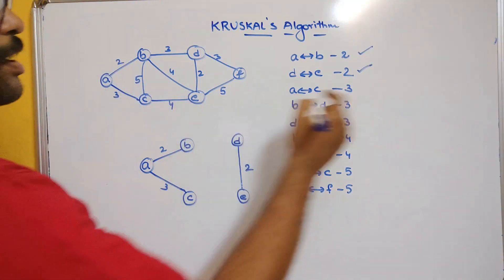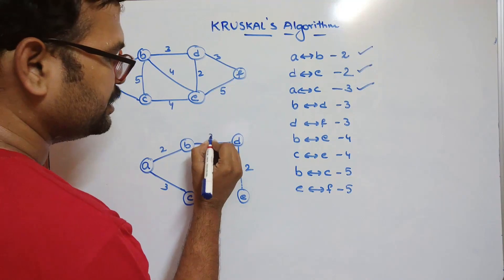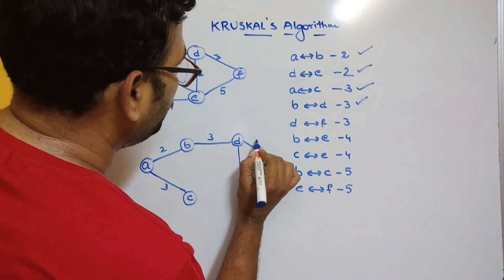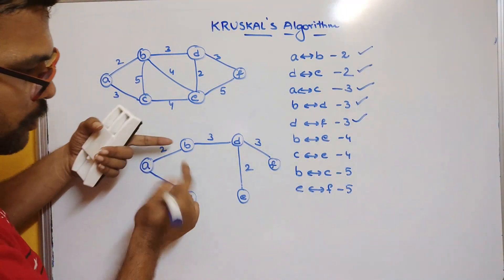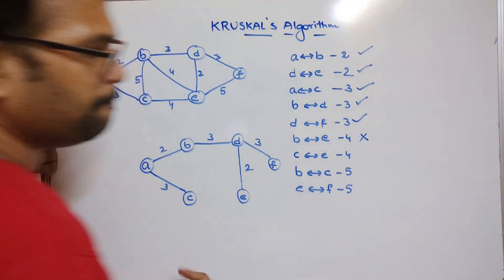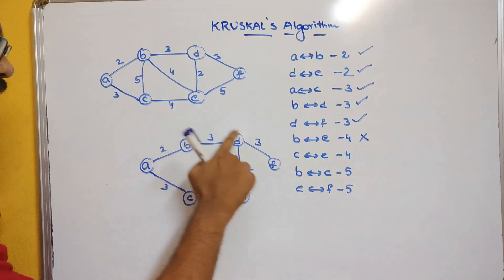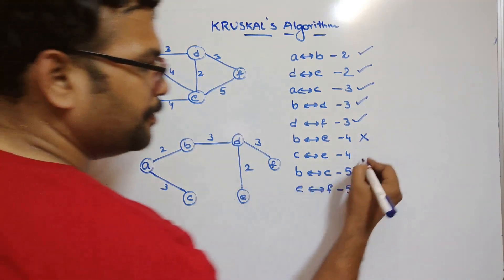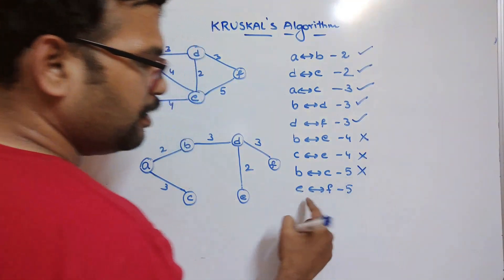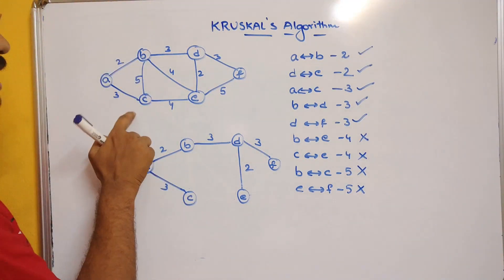A–C (cost 3) is added. Next B–D — it doesn't form a cycle, so include it (cost 3). Next D–F — no cycle, so include F connected to D (cost 3). Next B–E — adding this edge forms a cycle, so reject it. Next C–E — adding this edge again forms a cycle (A–B–D–E–C–A), so reject it. Next B–C — forms a cycle, reject. Next E–F — forms a cycle, reject.